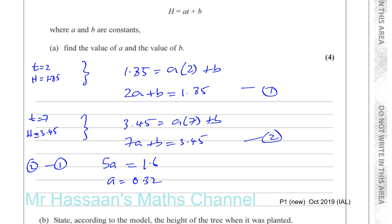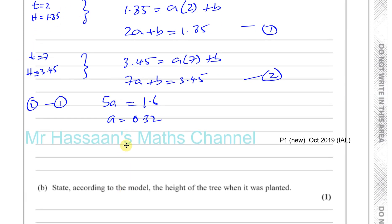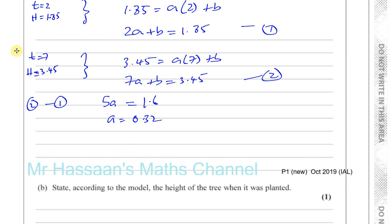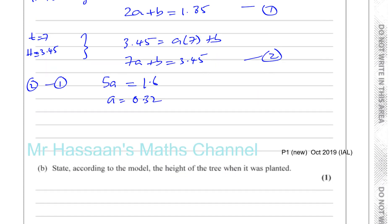Now we need to find b by substituting into one of the equations. Equation 1 looks simpler, so let's take a = 0.32 and substitute it: 2 times 0.32 plus b = 1.85.